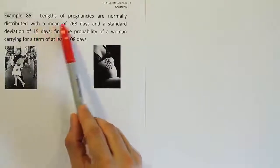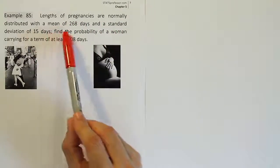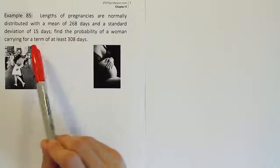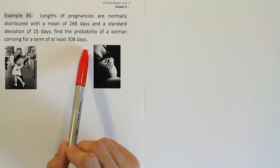Example 85. Lengths of pregnancies are normally distributed with a mean of 268 days and a standard deviation of 15 days. Find the probability of a woman carrying for a term of at least 308 days.